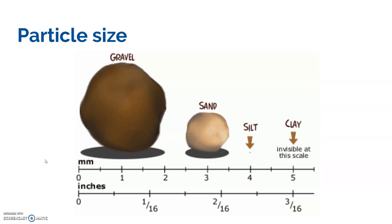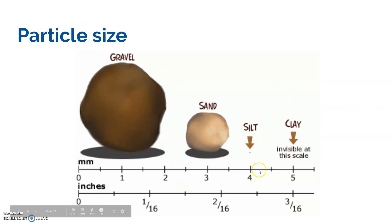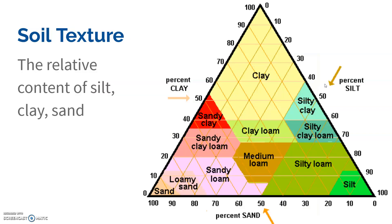If we look at soil under a microscope or a hand lens and take measurements of the different types of particles, there are four main types: gravel, which are the really big pieces, then sand, silt, and clay. We really focus on the smaller particles, and the composition of soil — how much of that soil is made out of the different types of particles — determines the properties of that soil.